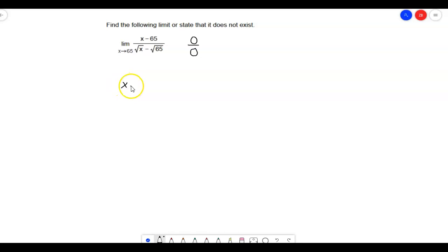x minus 65 over the square root of x minus the square root of 65. And you might look at that and say, well, there's nothing really to factor here.